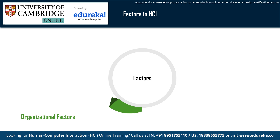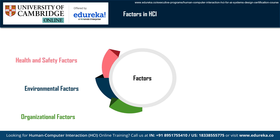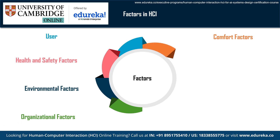Factors in HCI include organizational factors such as training, job design, politics, roles, and work organization. Environmental factors like noise, heating, lighting, and ventilation impact the user experience. Health and safety factors play a crucial role in ensuring the well-being of users. User-related factors include cognitive processes, motivation, enjoyment, satisfaction, personality, and experience. Comfort factors encompass aspects like seating, equipment, and layout for optimal user comfort.